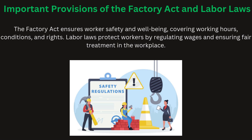The Factory Act outlines regulations to ensure the safety, health, and welfare of workers in industries. It includes rules about working hours, safety measures, and worker rights. Labor laws govern employment conditions, wages, and employee benefits. These laws are designed to protect workers from exploitation and ensure fair treatment in the workplace. Compliance with these laws is essential for maintaining a healthy industrial environment.